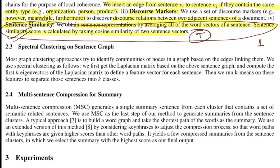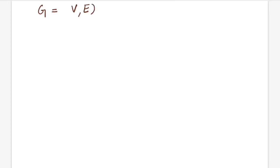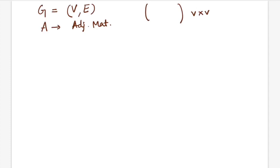The third step in the pipeline is spectral clustering on sentence graphs. Consider a graph G with vertices V, edges E, and adjacency matrix A. The adjacency matrix is a V×V matrix where each row and column correspond to a vertex; zero entries denote unconnected vertices and non-zero entries denote connected vertices. In a weighted graph, cell values are the weights with which vertex vi connects to vj, and all diagonal entries are zero.